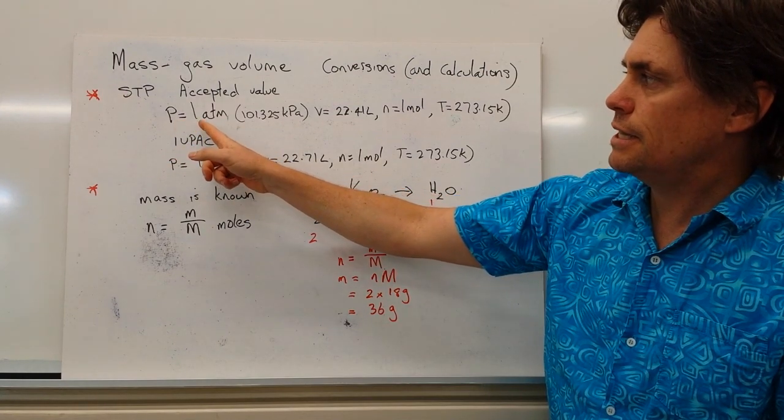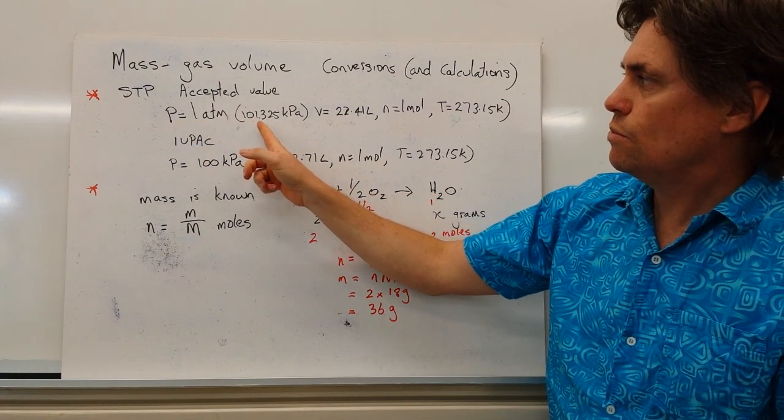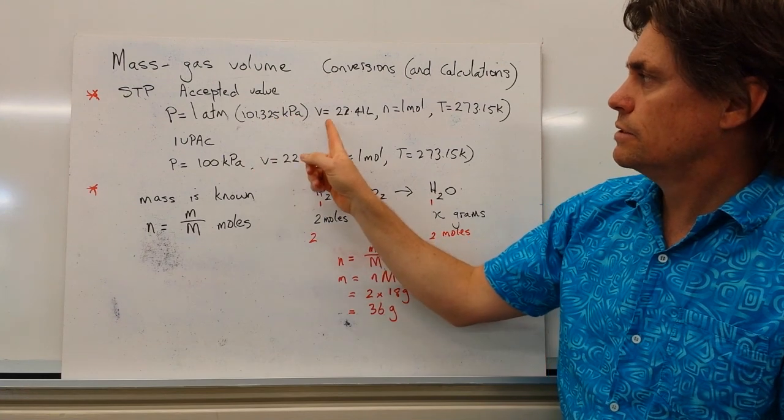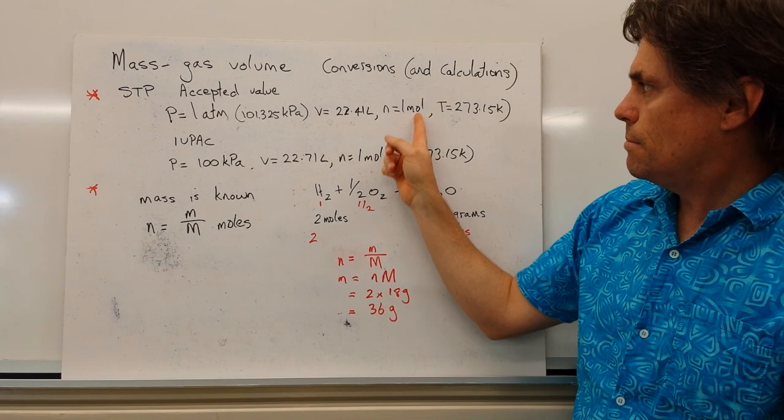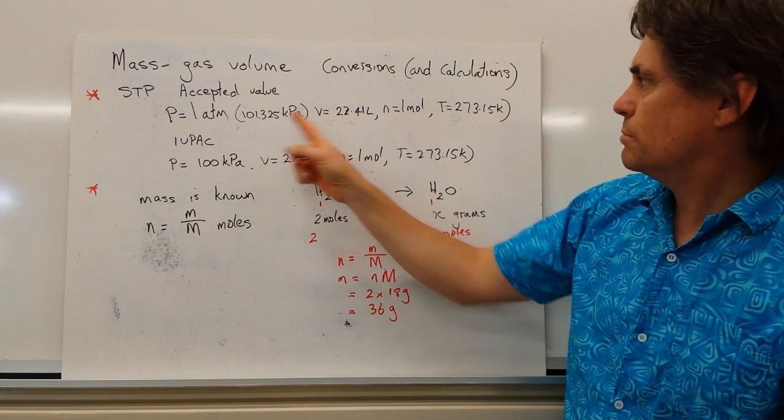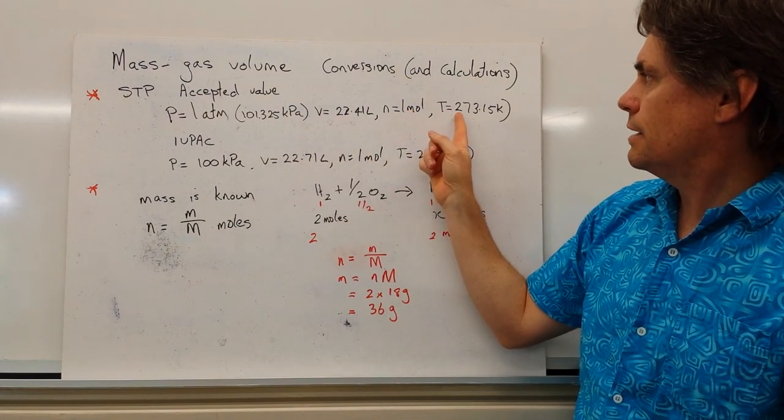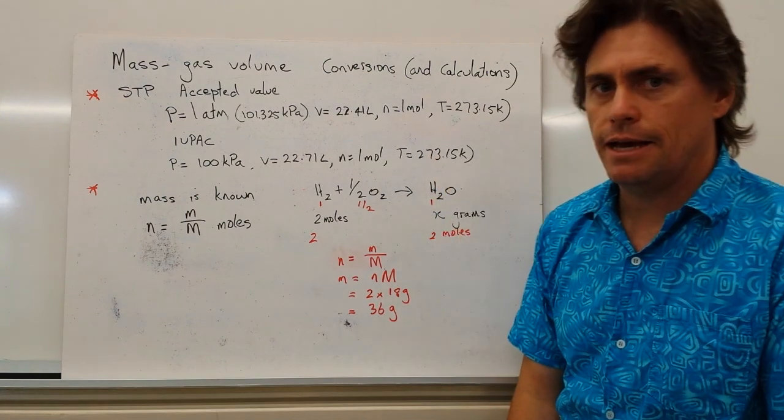The pressure is given to us as 1 atmosphere or 101.325 kilopascals. Volume is 22.41 litres. One mole of gas exists at this volume and this pressure. And our temperature is held at 273.15 K.